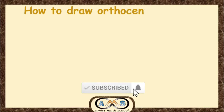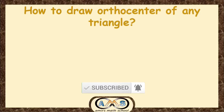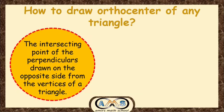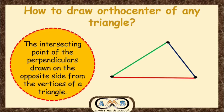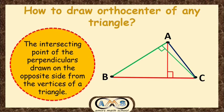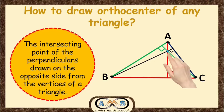Now let's learn how to draw the orthocenter of any triangle. What is the orthocenter? The intersecting point of the perpendiculars drawn on the opposite side from the vertices of a triangle is known as the orthocenter. This is our triangle A, B, C. Draw a perpendicular to side BC from A, a perpendicular from C to AB, and a perpendicular to AC from B. These three perpendiculars intersect at one point, which is known as the orthocenter of triangle ABC.